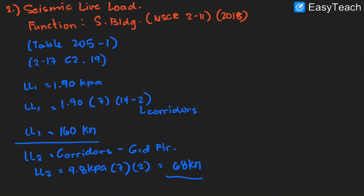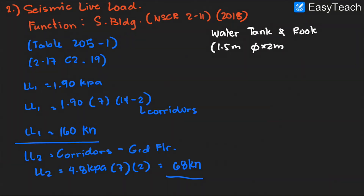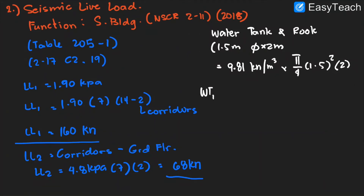Additionally, we will add a water tank on the roof deck. The water tank has a diameter of 1.5 meters and a depth of 2 meters. The weight of water is 9.81 kN/m³, and the volume is (π/4) times 1.5² times 2. The weight of the water tank is 35 kilonewton. Now we can compute the total loads with respect to dead load and live load.